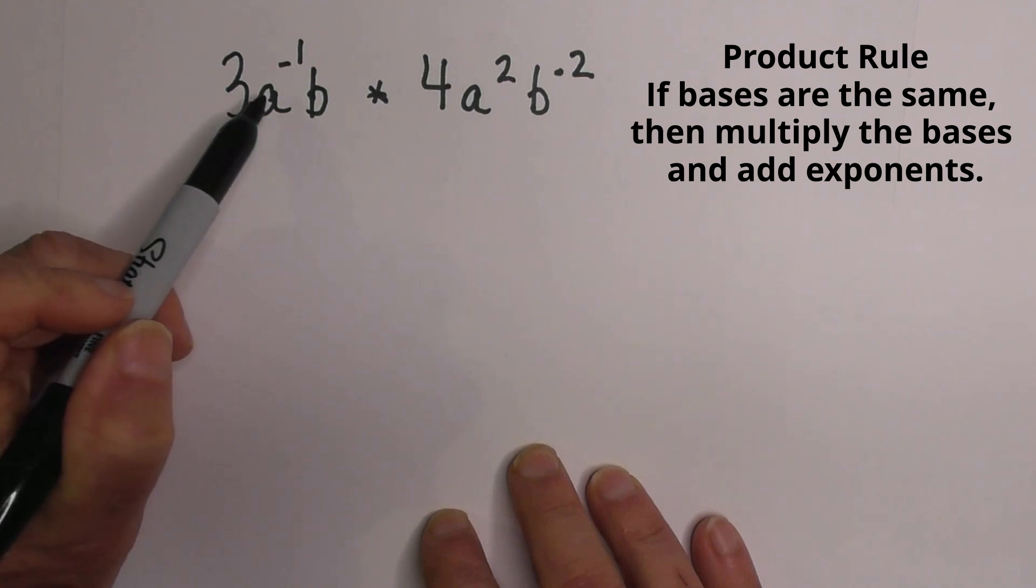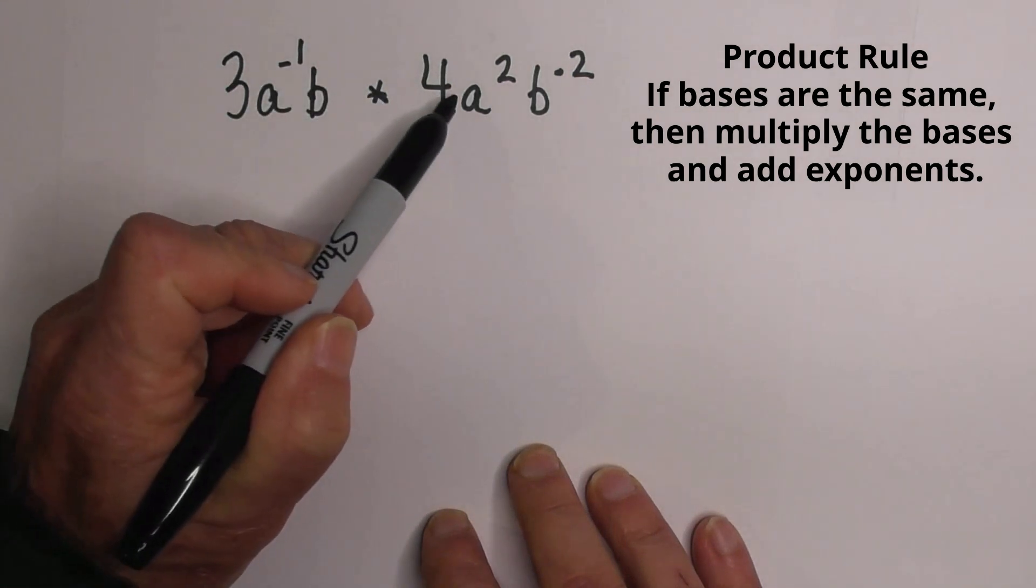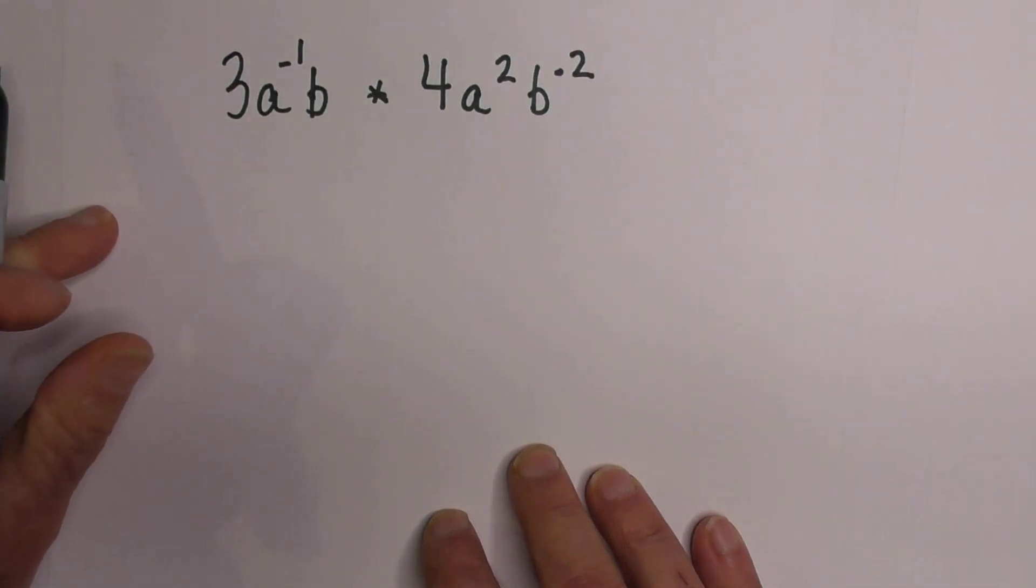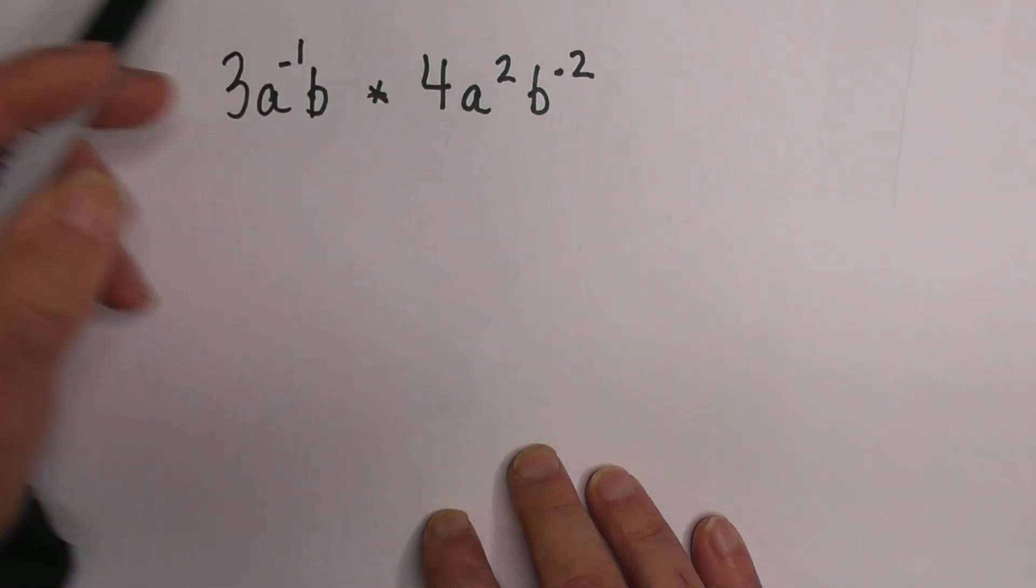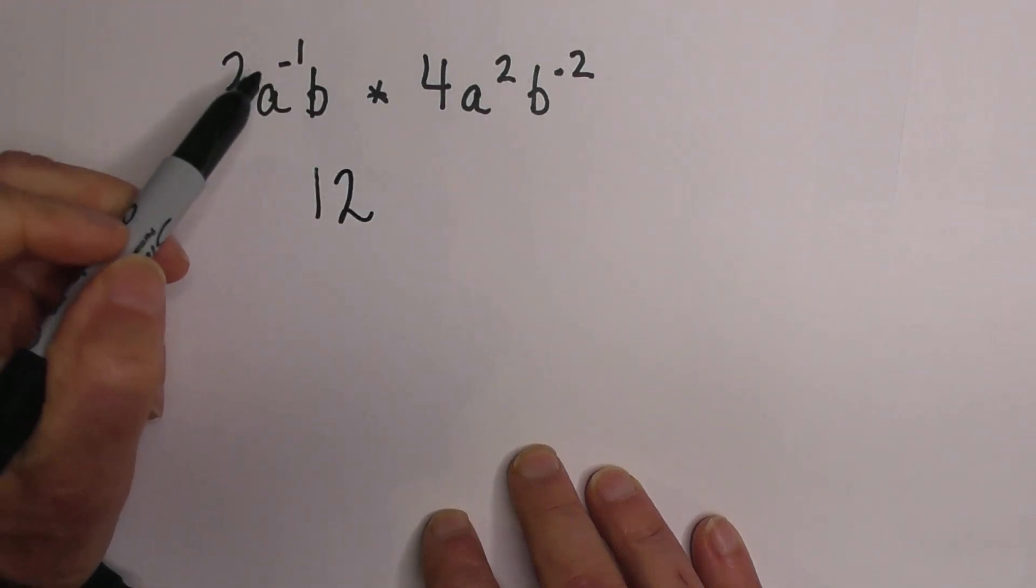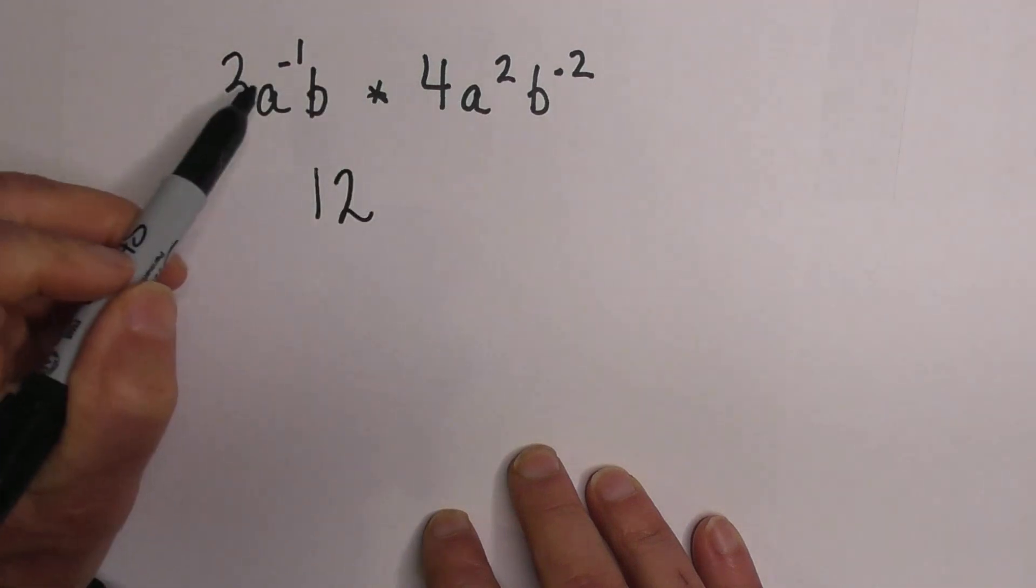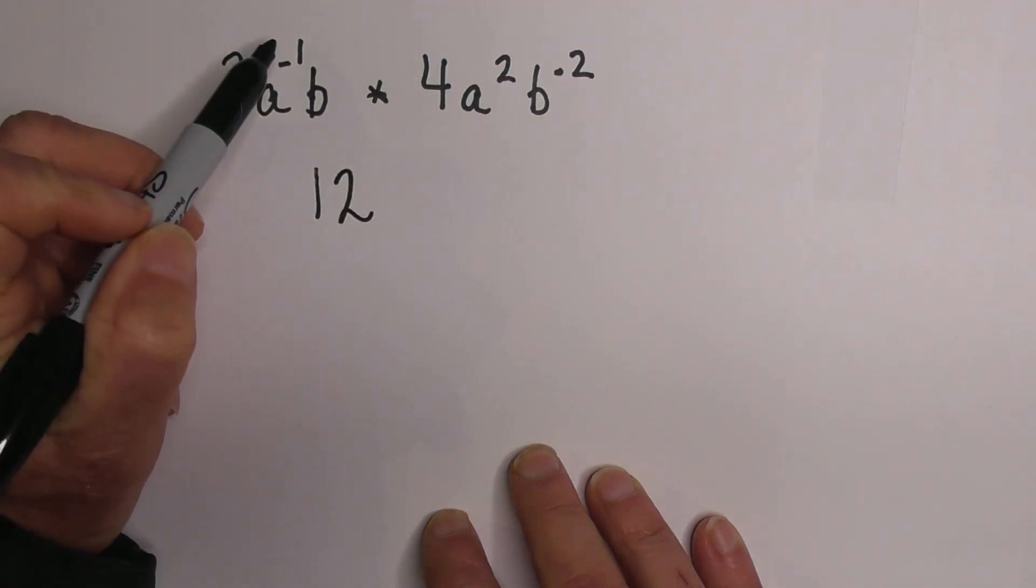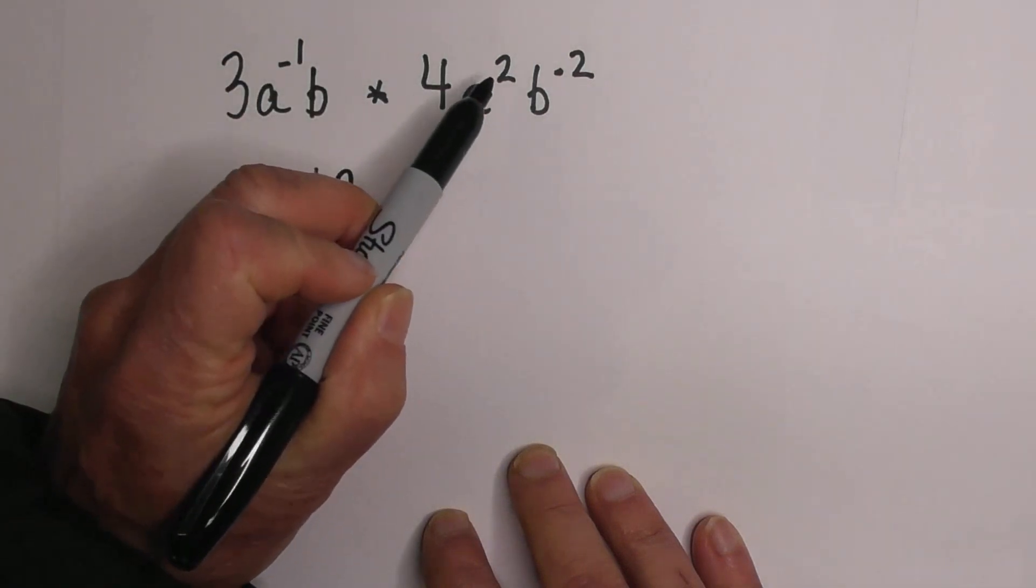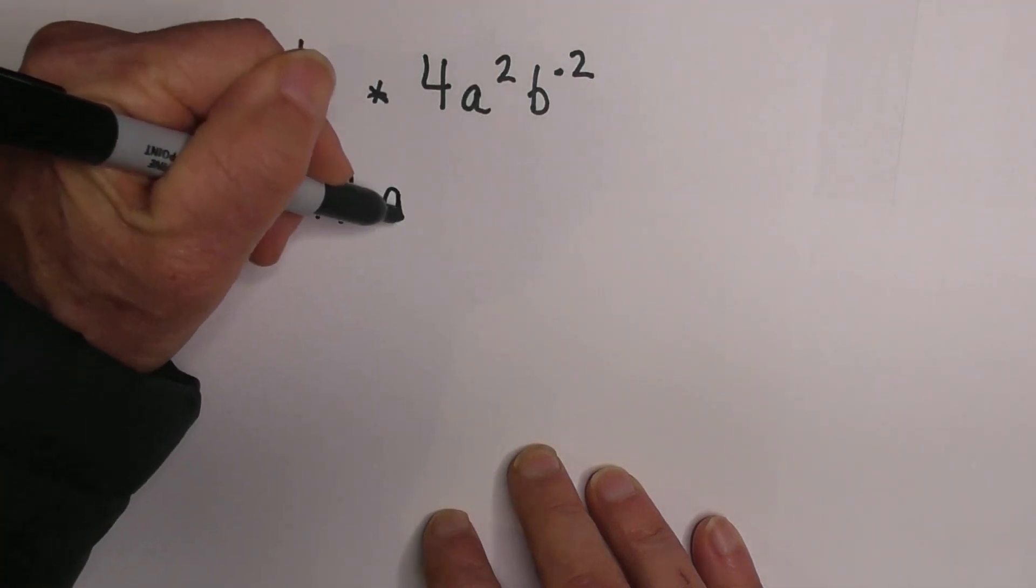We have 3AB times 4AB also. The 3 and the 4 are the coefficients, so we're going to go ahead and multiply them. So that gives us 12. We're now going to, we would multiply the bases, but we have an A, so we're going to add the exponents. And 2 minus 1 is 1.